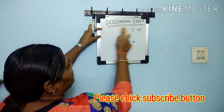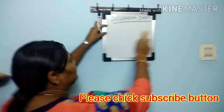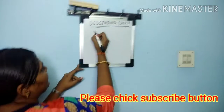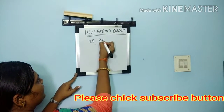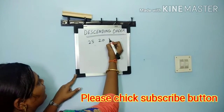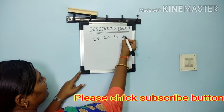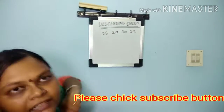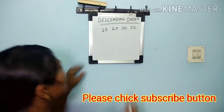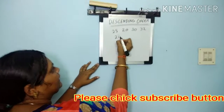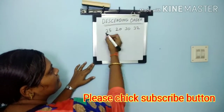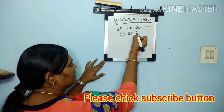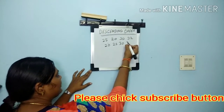We can practice with another, bigger number. For example, we are taking 25, 20, 30, 32. Ask them which is the smallest number. They will say 20. Then the next smallest is 25, then 30, then 32.